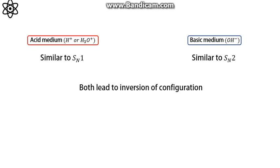In acid medium, a mechanism similar to SN1 is followed due to the formation of a carbocation-like character in the transition state. Whereas in basic medium, a mechanism very similar to SN2 or more or less SN2 itself is carried out. Both of these mechanisms involve inversion of configuration of the final product.